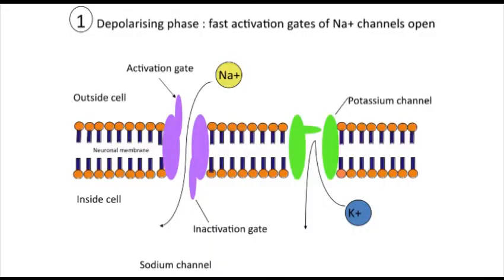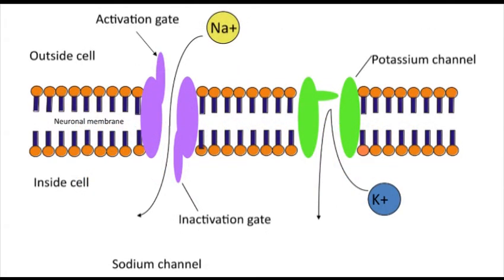When the membrane potential reaches the threshold potential, this triggers the opening of voltage-gated sodium channels, which are densely packed within the axon hillock. Opening of voltage-gated sodium channels causes a rapid influx of sodium ions, which travel down their electrochemical gradient into the cell. This inward flow of positively charged sodium ions causes the inside of the cell to become positively charged. The opening of voltage-gated sodium channels is regenerative, meaning that more and more channels open, and soon there is a massive influx of sodium into the cell. The result is that the membrane potential reverses polarity and exceeds zero millivolts.